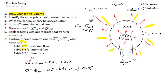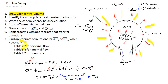Step six now is to replace all terms with appropriate heat transfer equations. We can solve for E_gen since we know alpha and G (or can express G as sigma times T_surroundings to the fourth), h-bar from the convection correlation, surface area A of the sphere, T_s, and T_infinity. So we know everything and can calculate E_gen. To summarize the most important points of the problem-solving methodology: always draw your control volume first, then identify the appropriate heat transfer mechanisms before writing the energy balance equation.